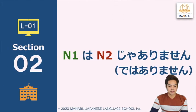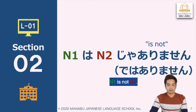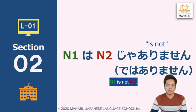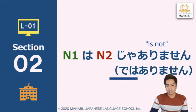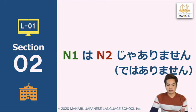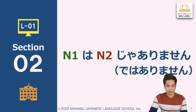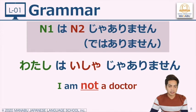Let's proceed to our next grammar point. This time we will have Noun 1 wa, Noun 2, ja arimasen. Instead of desu, it becomes ja arimasen. Remember that ja arimasen is the opposite of desu — desu is positive and ja arimasen is the negative form. Ja arimasen or de wa arimasen: ja arimasen is often used in conversation, while de wa arimasen is used in formal speech and written Japanese. Ja arimasen translates as 'is not.' Let's see the examples, following the pattern Noun 1 wa, Noun 2, ja arimasen or de wa arimasen.